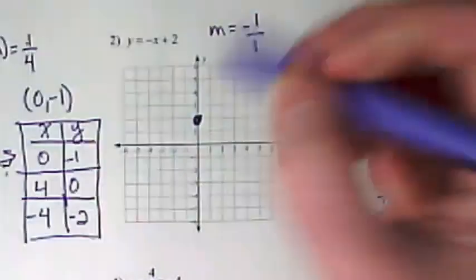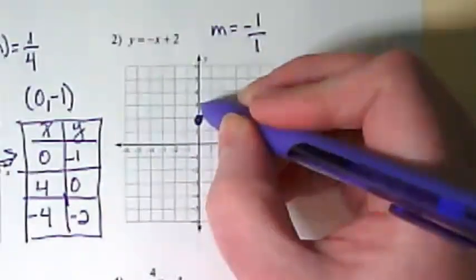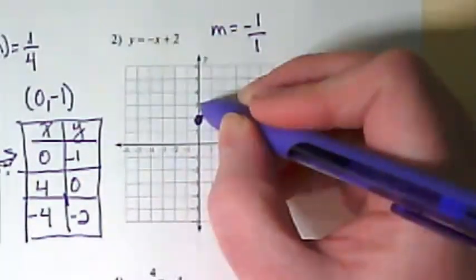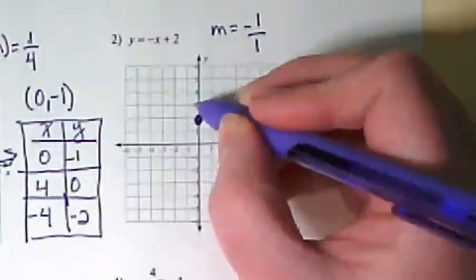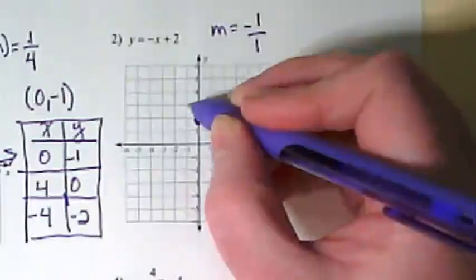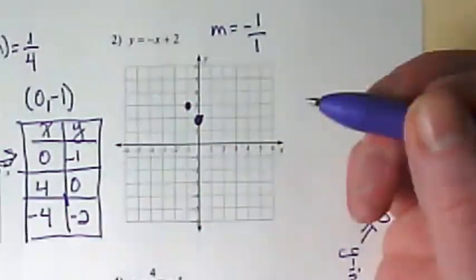That means I can rise up 1, but am I going to run to the left or to the right? It's left this time because it's negative.